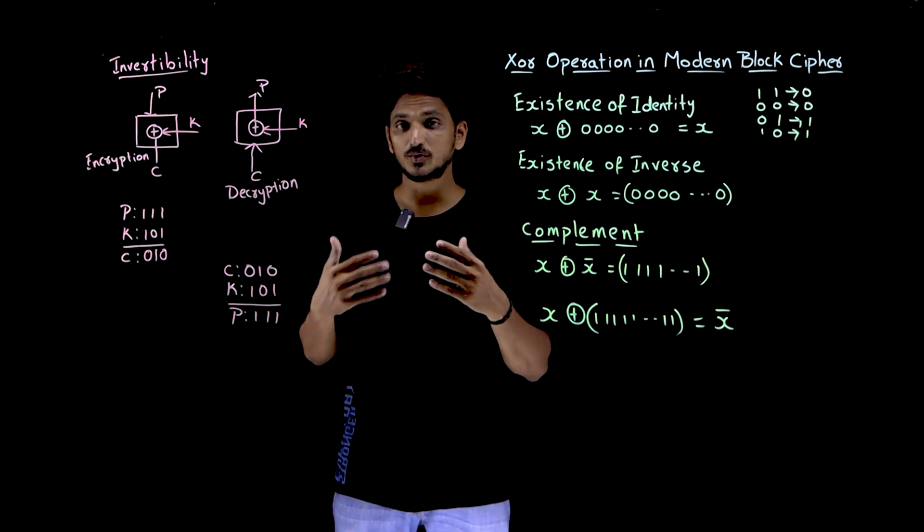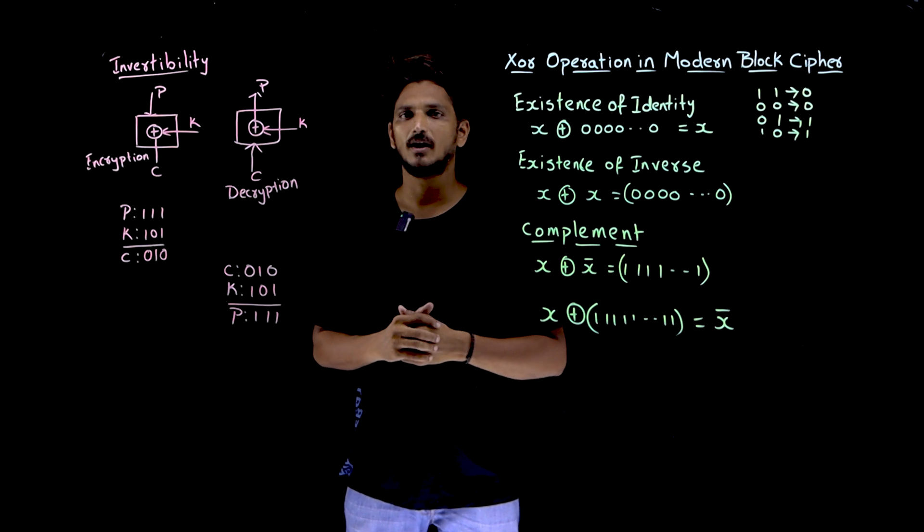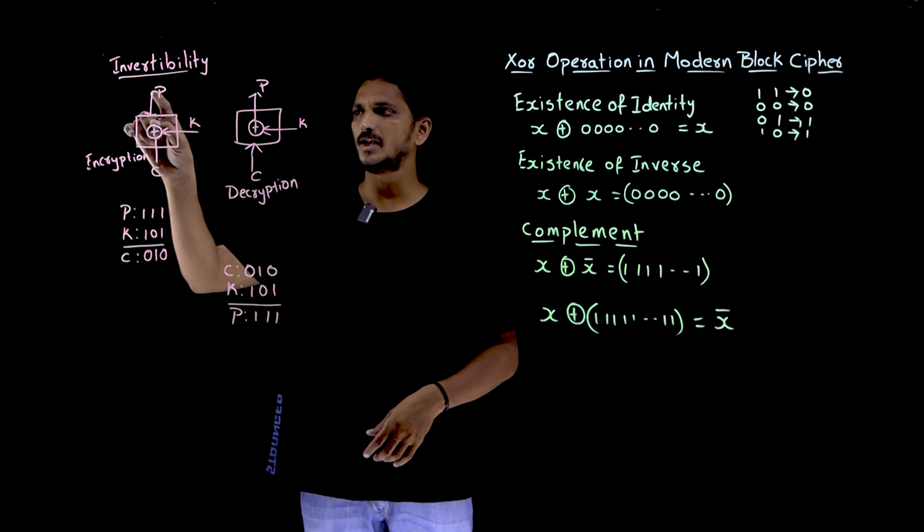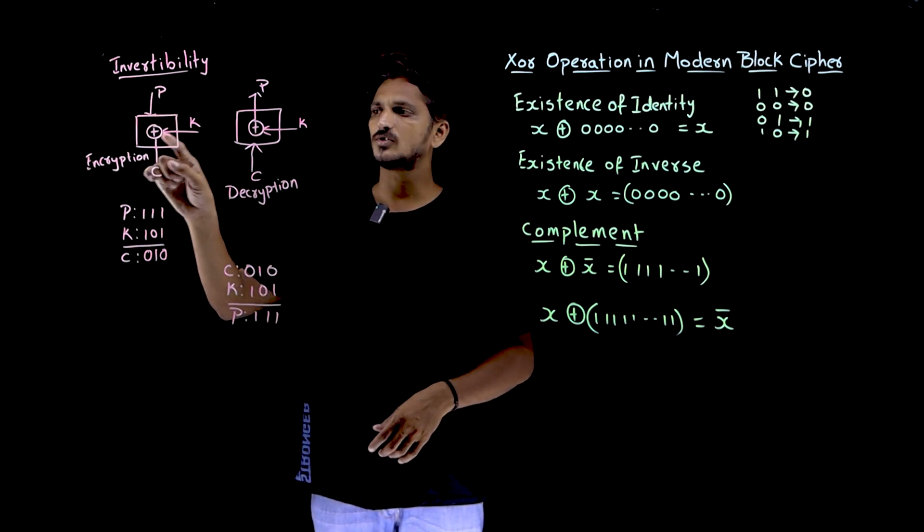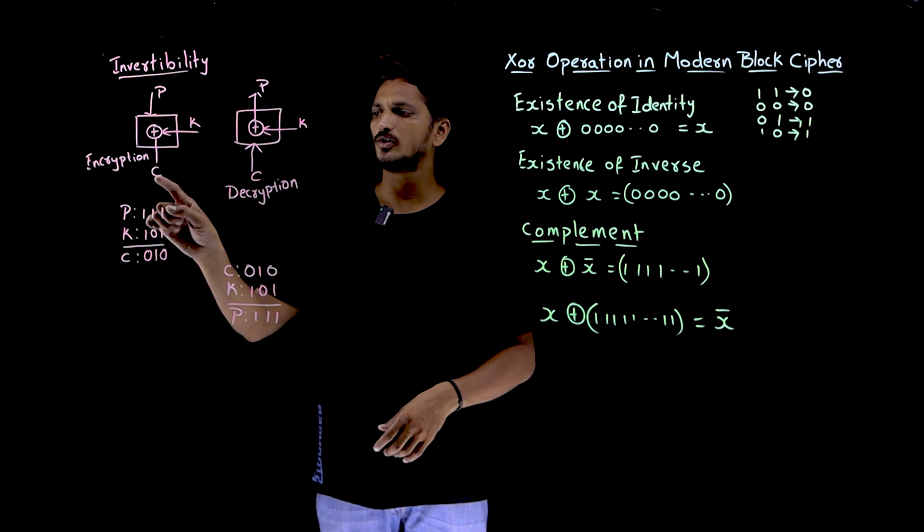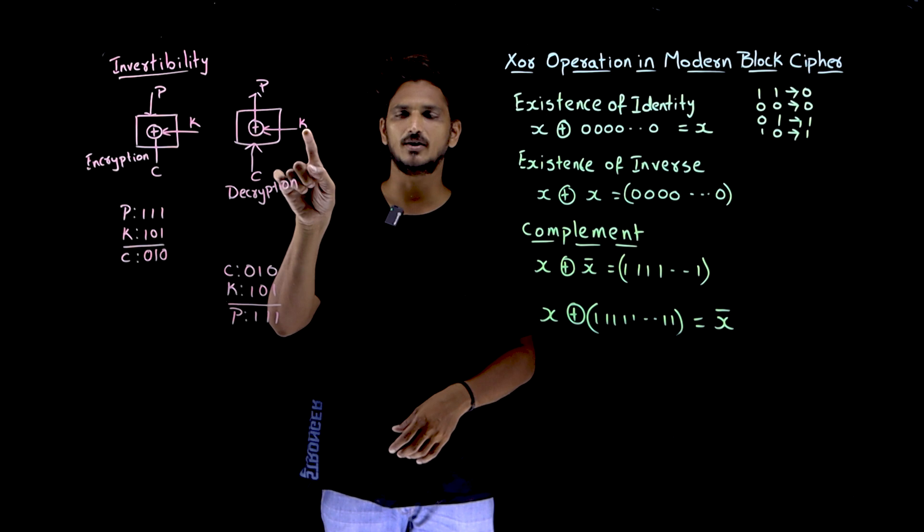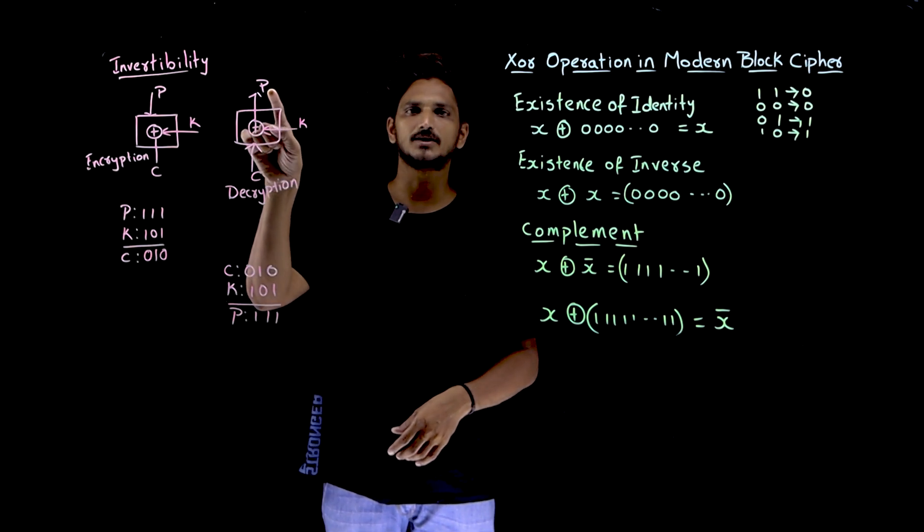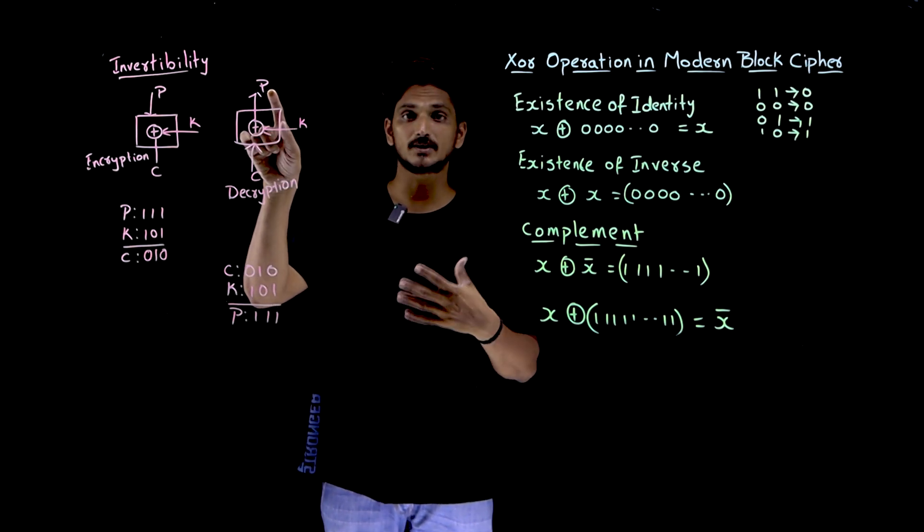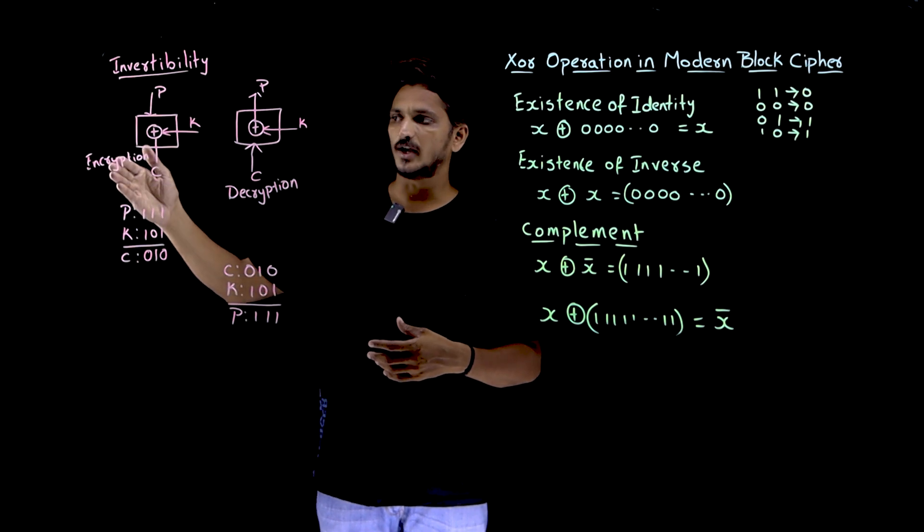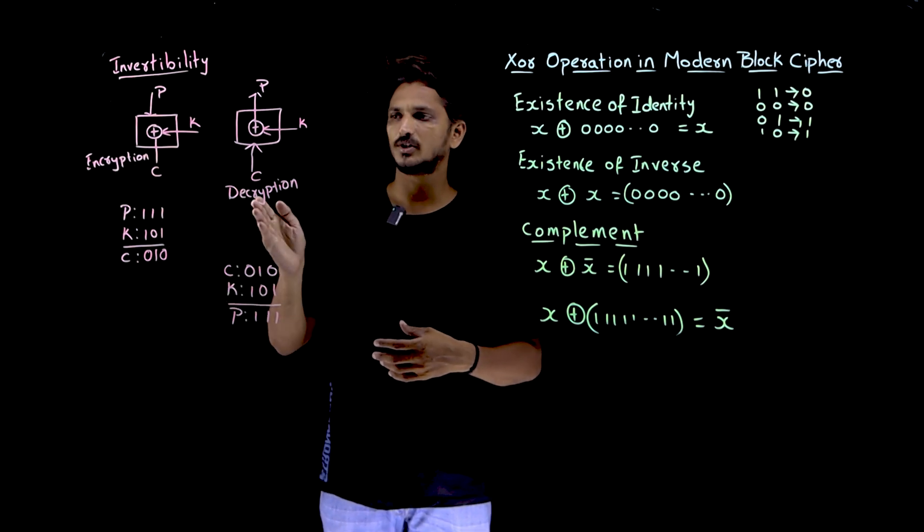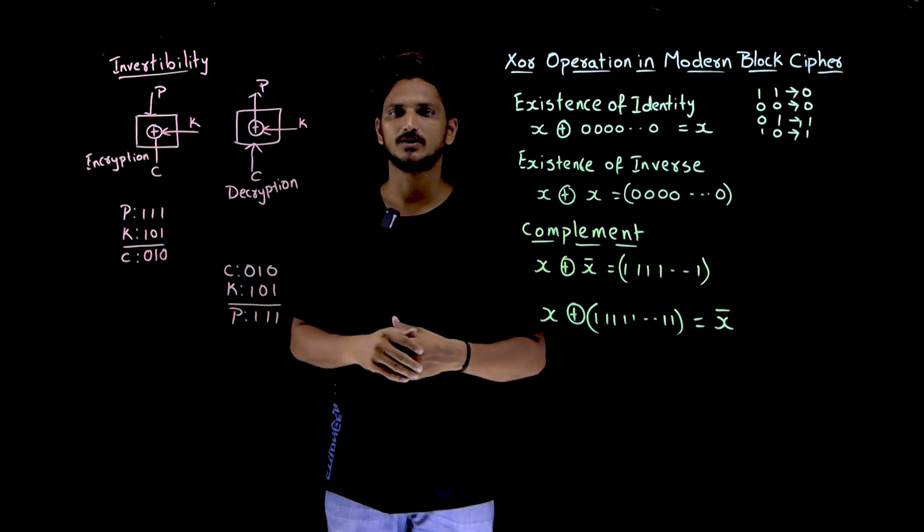Similarly, we can use XOR operation as invertibility here. Let us take an example. If you take a plain text and you are going to XOR with the key value, you are going to get cipher text. Similarly, cipher text when you XOR with the key value, you are going to get the plain text. Yes, it works as an invertible. So that is why during the encryption you do this, during the decryption you are going to do this.